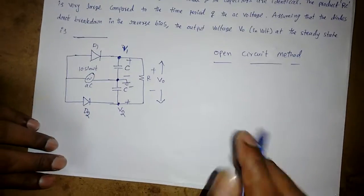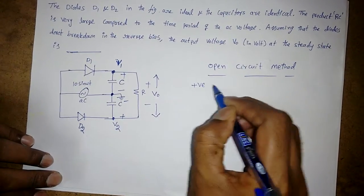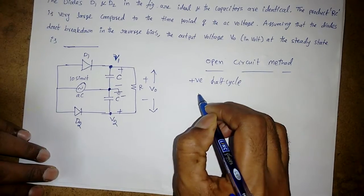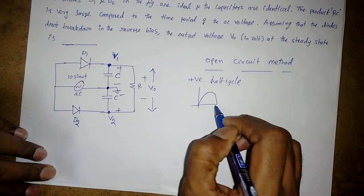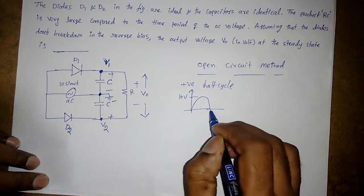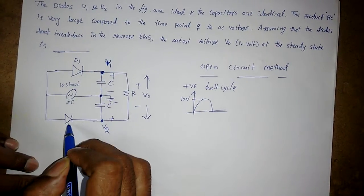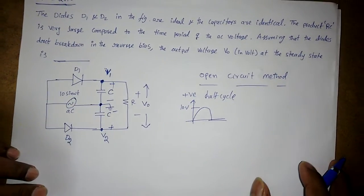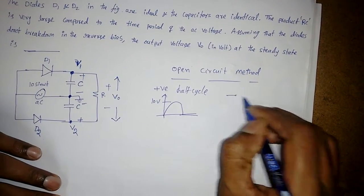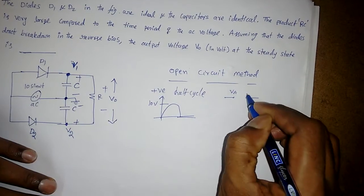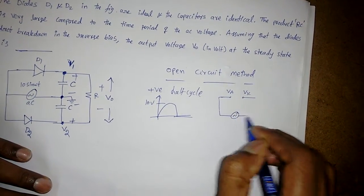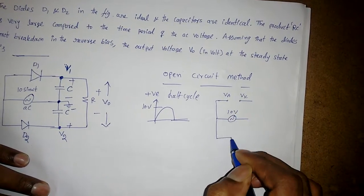So across this it will be V1, across this it will be V2. Now for a positive half cycle, the peak value is 10V. Now both diodes will be forward biased. We will see how using the open circuit method. Open the diode, find VA and VK.